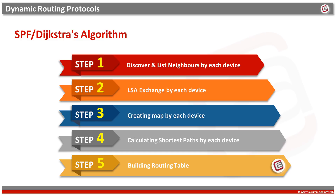Finally, with the complete set of Link State Advertisements in hand, each node creates a graph — a map of the network. Each node independently runs an algorithm over the map to determine the shortest path from itself to every node in the whole network. This is the whole process of shortest path calculation using SPF, or Dijkstra's algorithm.